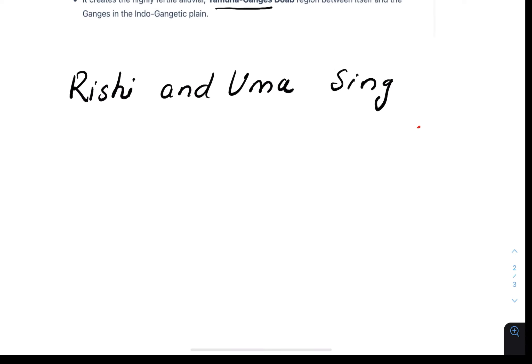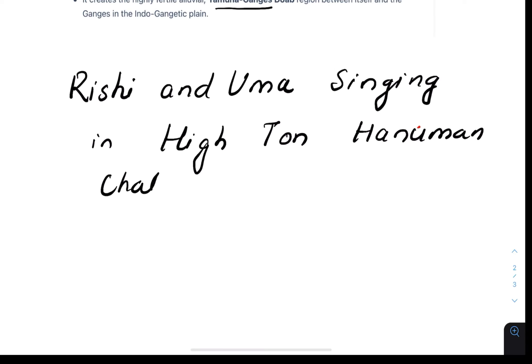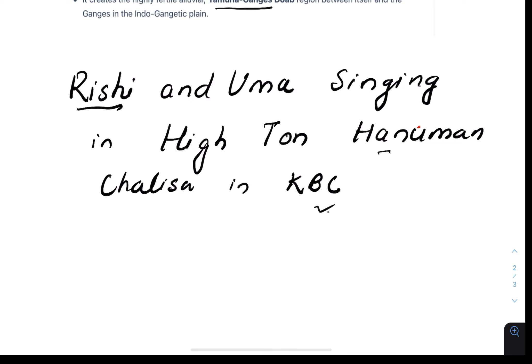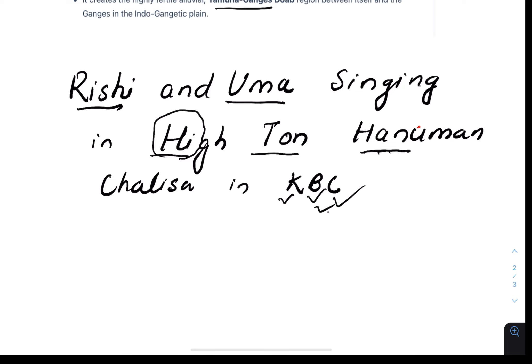Now, the trick to remember the tributaries: imagine Rishi and Uma have been invited to KVC, and there they are singing Hanuman Chalisa in high tone. Rishi stands for Rishi Ganga, Uma for Uma river, H-I for Hindun, Tone for Tones river, Hanuman for Hanuman Ganga; and in KVC, K stands for Kane, B for Betwa, and C for Chambal.